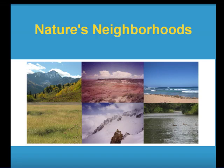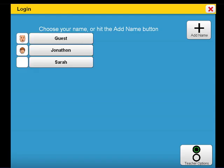Welcome to Nature's Neighborhoods. This curriculum companion is about the basic types of habitats. It is designed to supplement a lesson on habitats at the K-2 academic grade levels. To start with, let's access the individualized settings of a particular student.